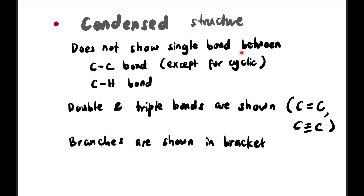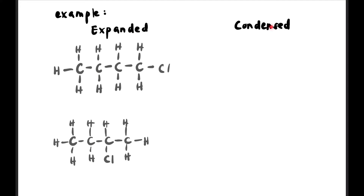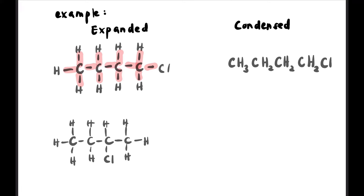The second type of structural formula is called condensed structure. In condensed structure, single bonds between C-C and C-H are not shown, except in cyclic compounds. Double and triple bonds must still be shown. If there are branches, they must be shown in brackets. Let's look at this example — if we transform the expanded structure to condensed: we remove all bonds and write CH3-CH2-CH2-CH2-CH2Cl. All bonds disappear and we just write the atoms sequentially.